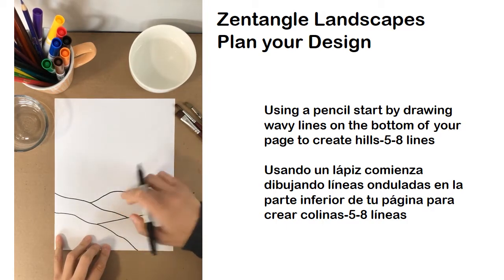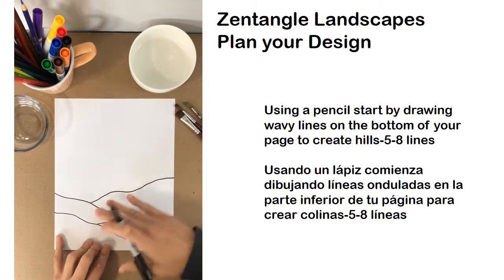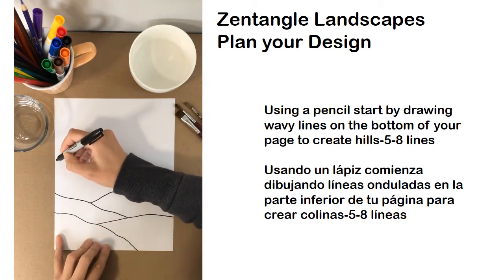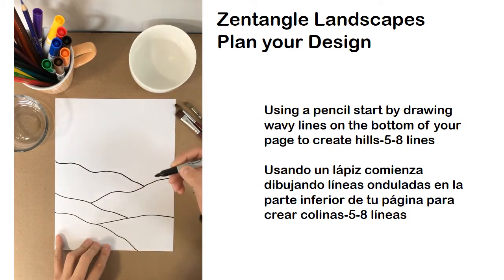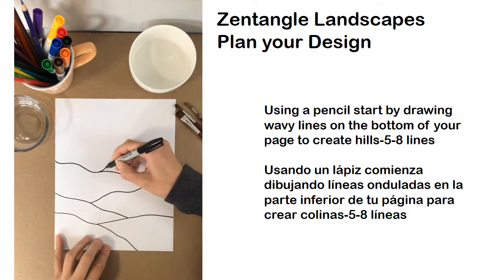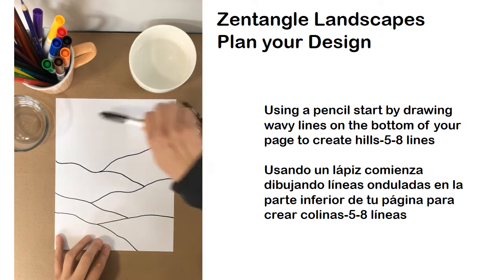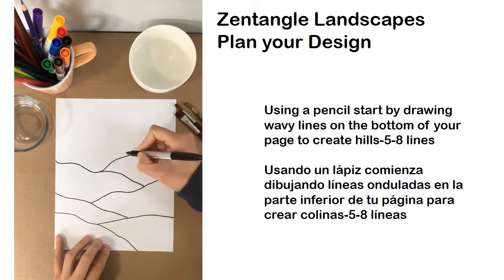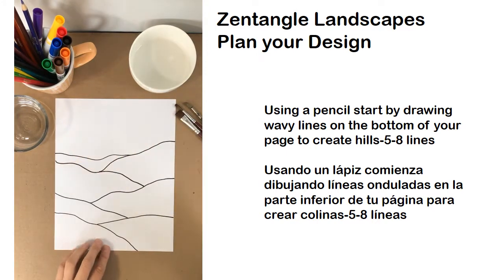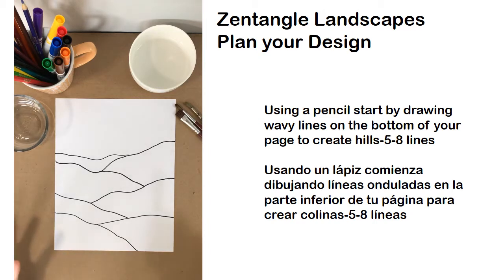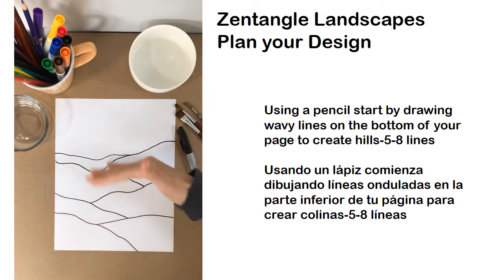I've already made four lines. This is looking a little too pattern-y for me, so maybe I'm going to pull like a big wave all the way over here — that's five. And maybe one more up here because I want to have some nice sky space. Maybe another tiny one over there. So step number one is plan your design: use whatever tool you'd like to make wavy lines for the base of the hills of your landscape.